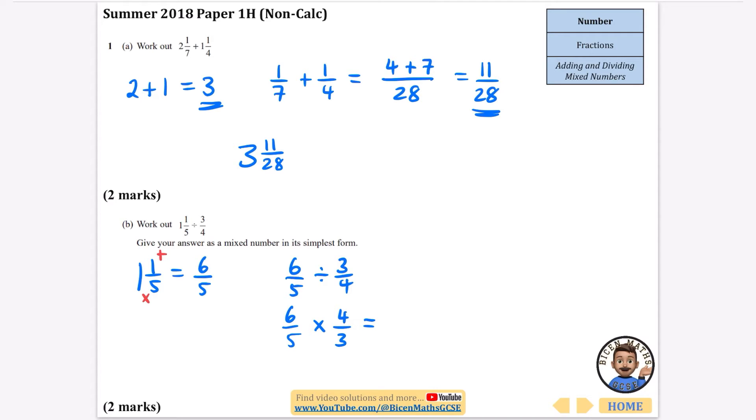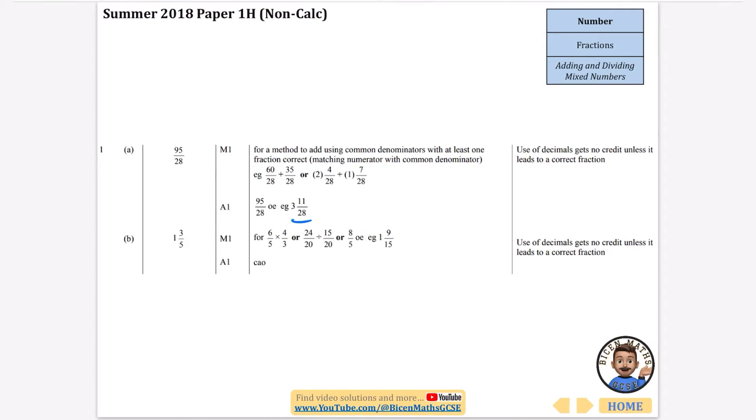So what we're going to do now is, we could simplify by doing some cross division, but I'm actually going to just do 6 times 4, which is 24, and 5 times 3, which is 15. Now it does want it as a mixed number in its simplest form. So I'll simplify this by dividing the top by 3 and by dividing the bottom by 3. 24 divided by 3 is 8 and 15 divided by 3 is 5. Now 8/5, 5 goes into 8 once and there would be 3/5 left over. So we've got 1 and 3/5. Let's check. We've got these two right. We have 3 and 11/28 and 1 and 3/5.